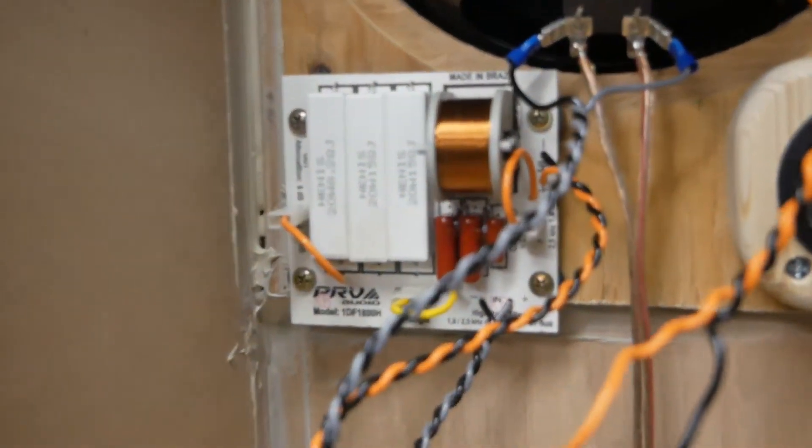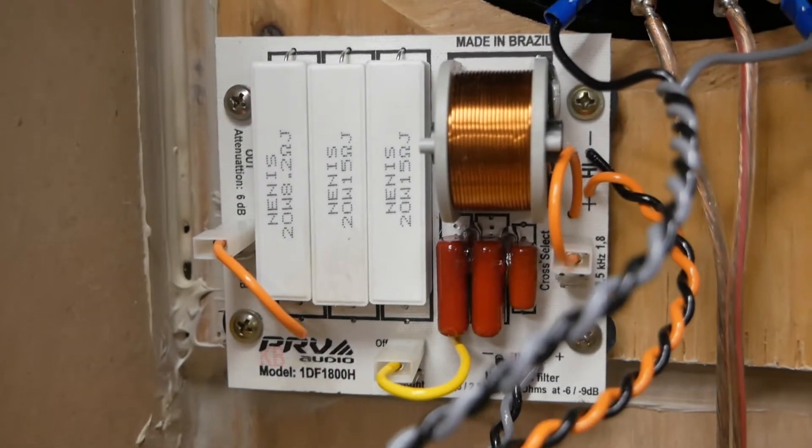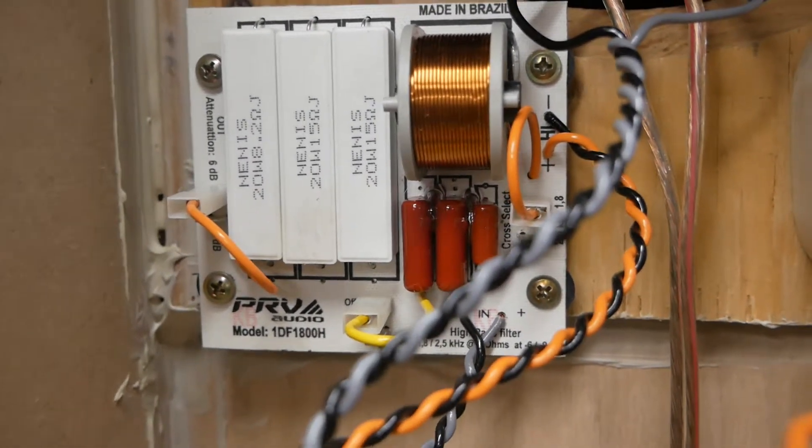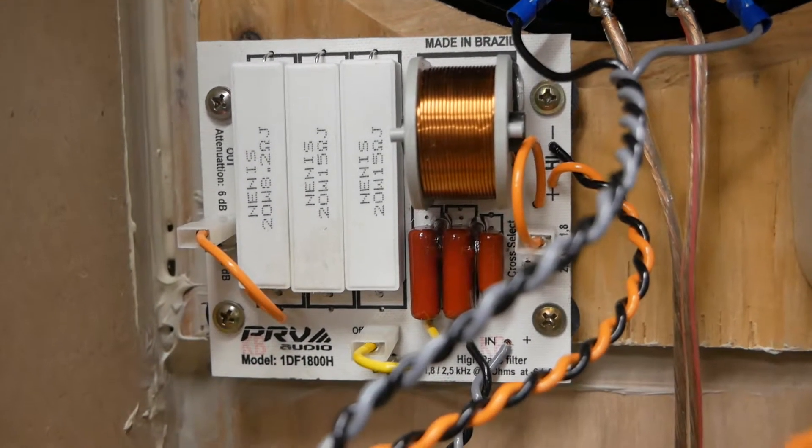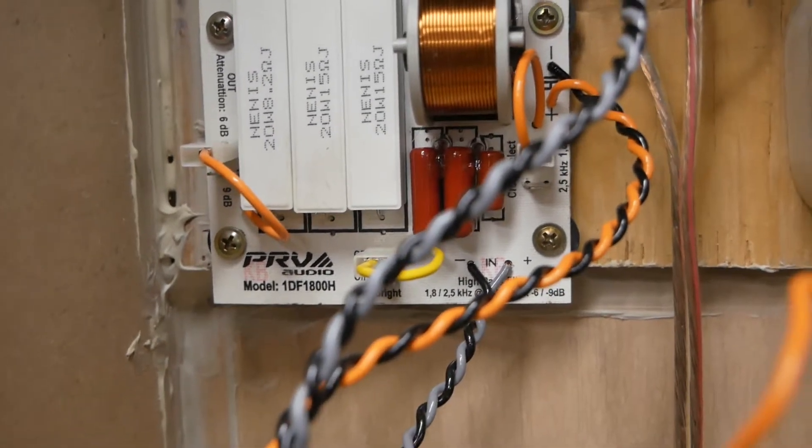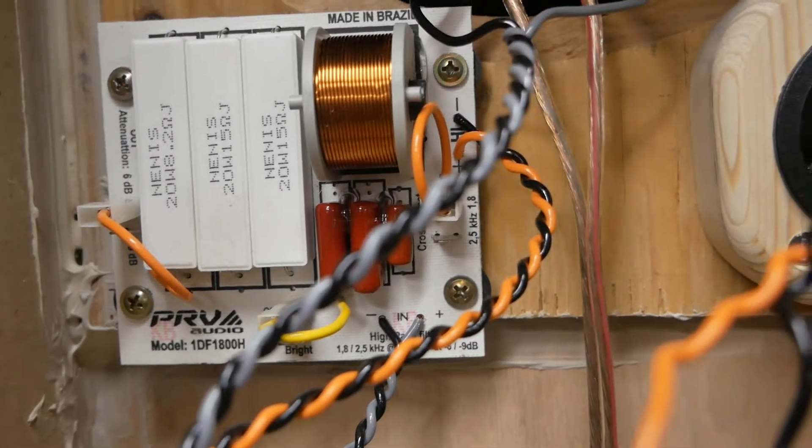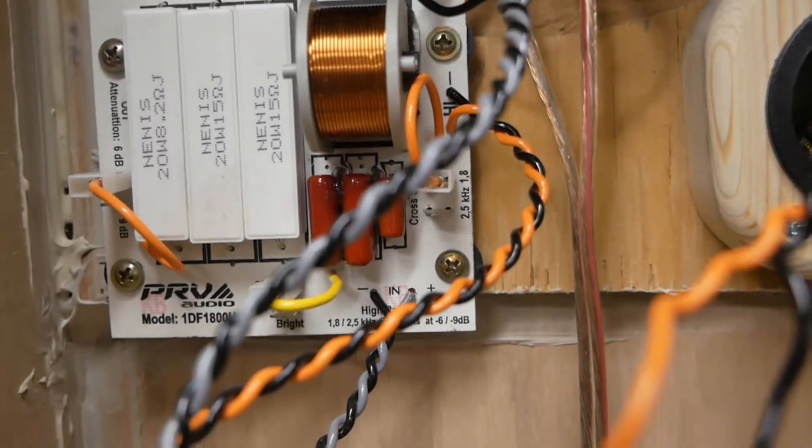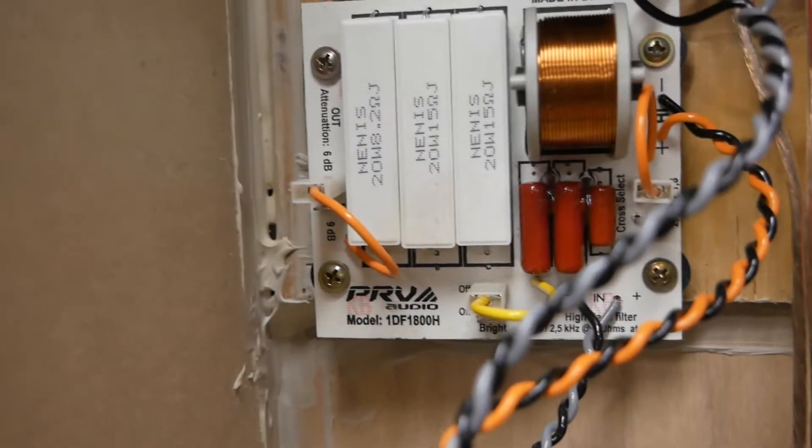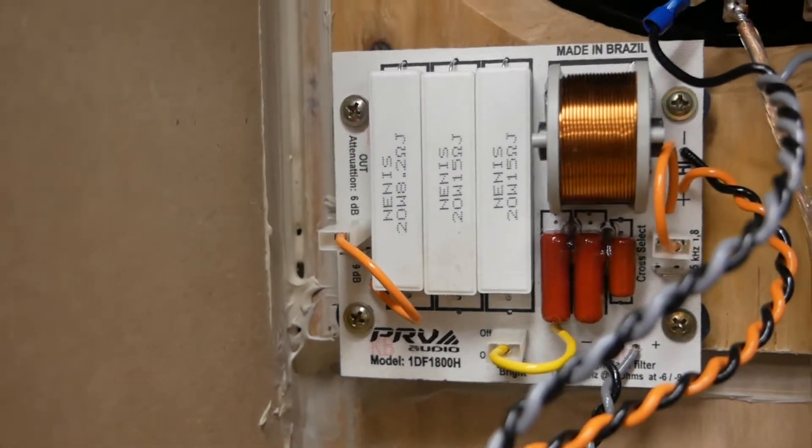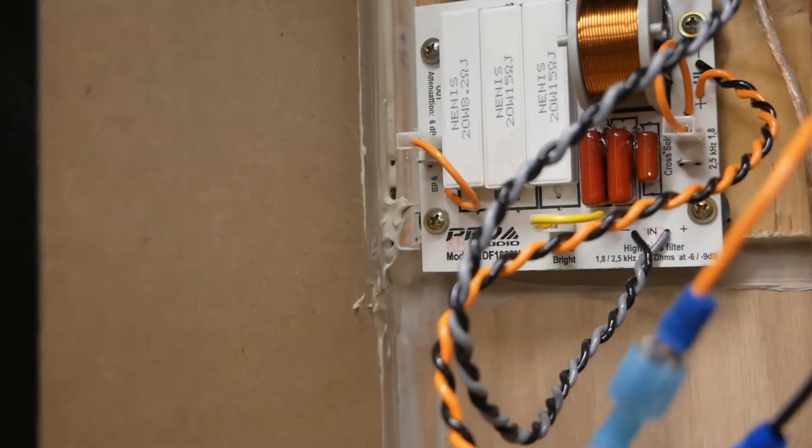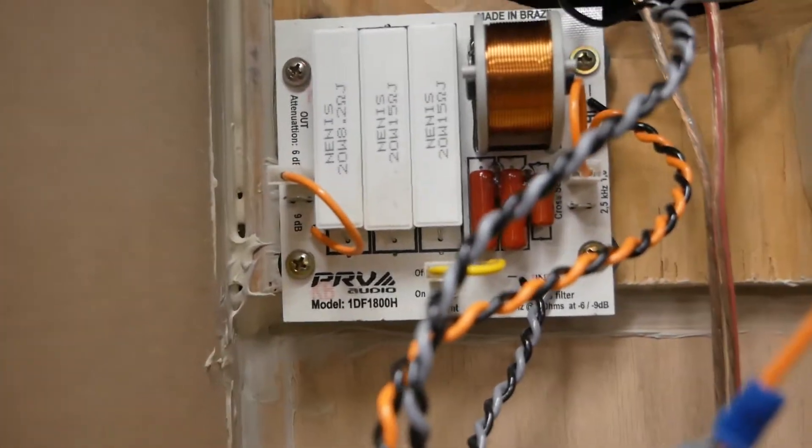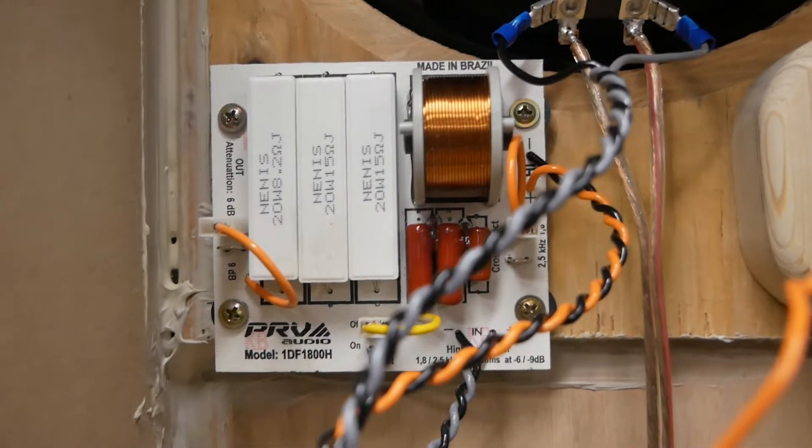I just wanted to show you what's going on here before they're completely sealed up. This is simply a high-pass filter, not a true crossover. It allows me to cross over at 1,800 Hz or 2,500 Hz, set the attenuation at 6 dB or 9 dB, and then it has what's called bright on and off, which is simply high-frequency attenuation.